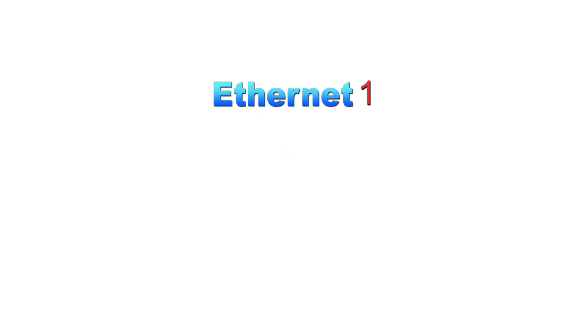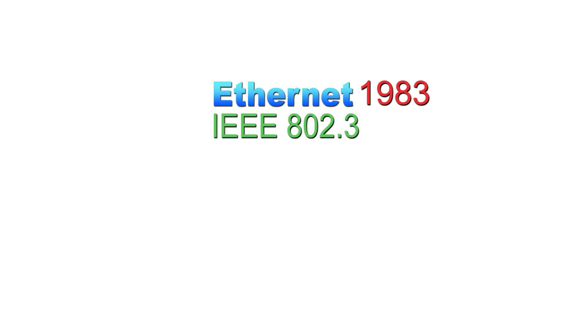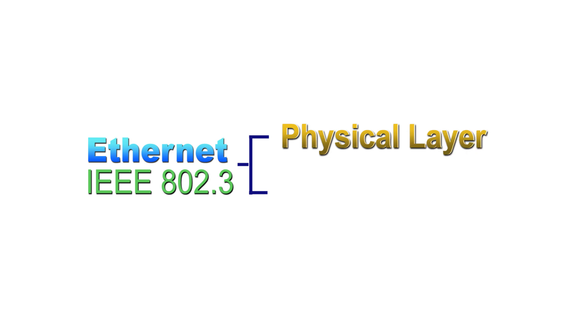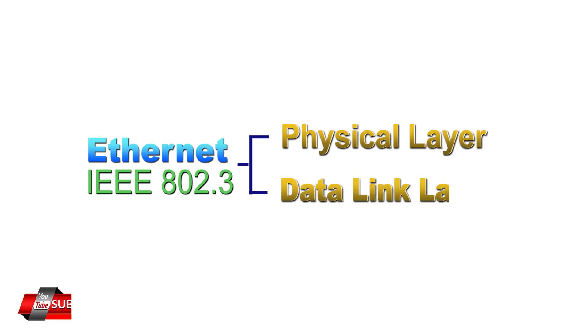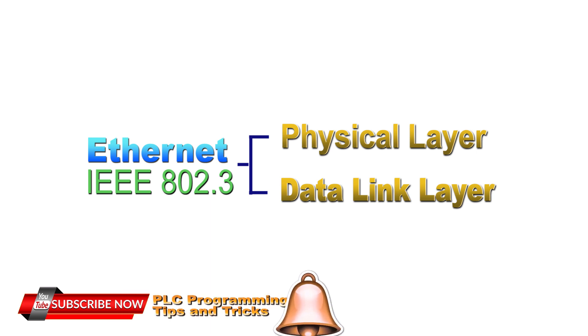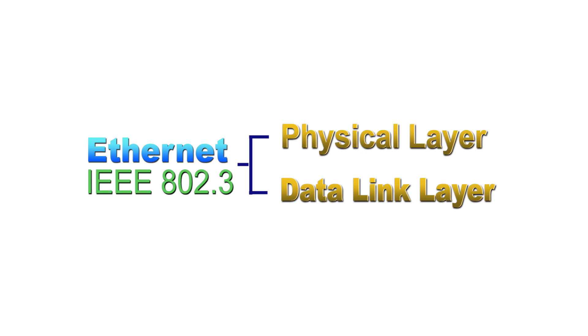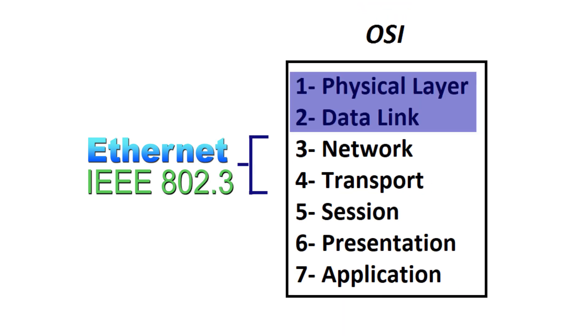In 1983, Ethernet was standardized as IEEE 802.3 by the Institute of Electrical and Electronics Engineers. This standard defines the physical layer and MAC, or media access control, portion of the data link layer of wired Ethernet — the first two layers of the OSI, or open system interconnection, model.